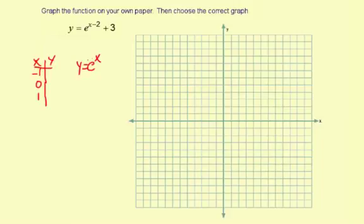So let's do the inputs and outputs. e to the negative 1, that's about one-third. e to the 0 is 1, and e to the 1 is about 2.7. I'm just estimating here for our graphing purposes.